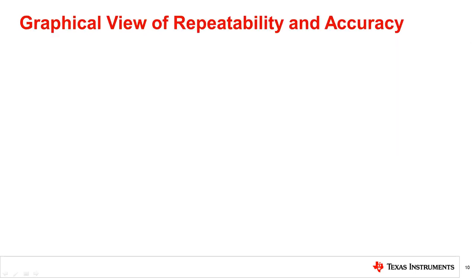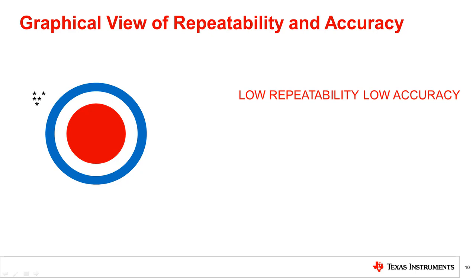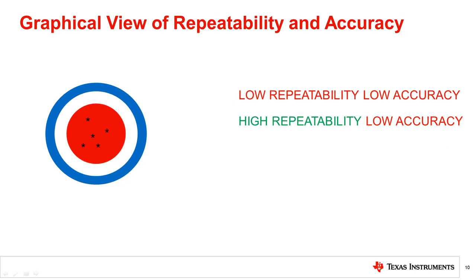To better understand the concept of repeatability and accuracy, we can use a dartboard in which the bullseye represents the accuracy limits of a sensor. Making five temperature measurements with the sensor yields four cases. In case one, the values are spread all over the dartboard — non-repeatable and inaccurate. In case two, the values are close to each other but outside the center circle — repeatable but inaccurate. In case three, values are within the center circle but with a large spread — non-repeatable but accurate. In case four, the values are within the circle with a small spread — repeatable and accurate.